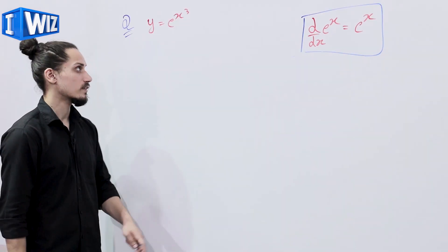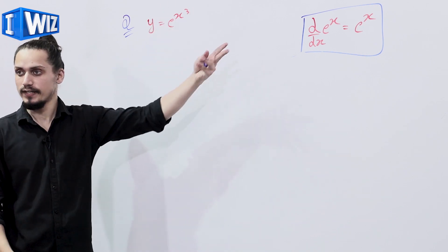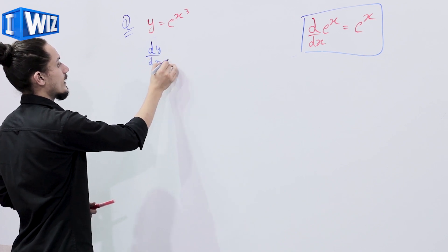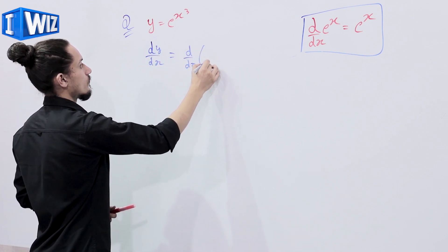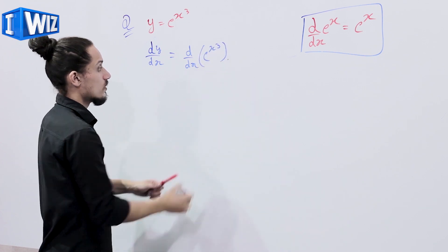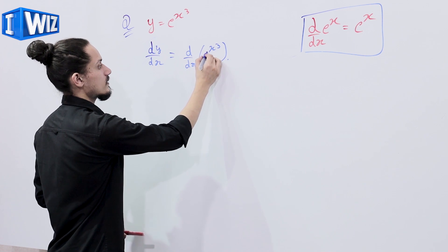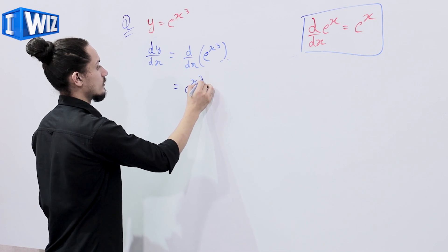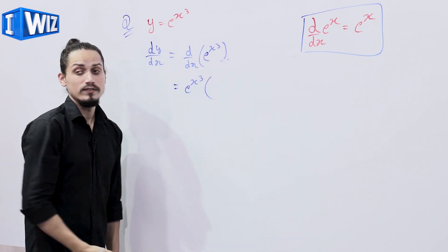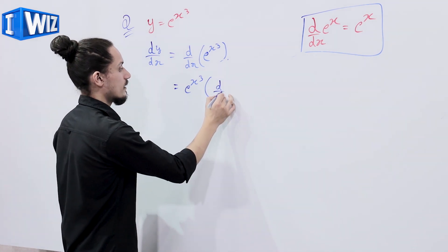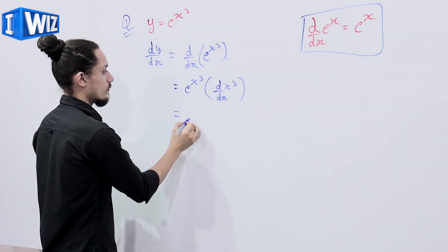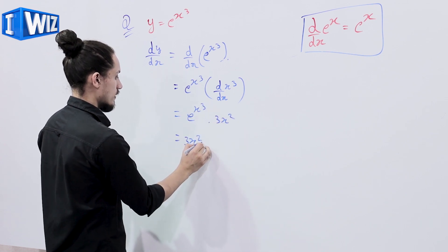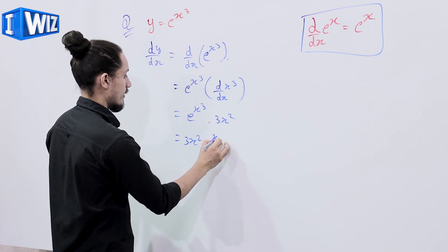In the next example we are given y = e raised to power x³. Its derivative dy/dx = d/dx of e^(x³). The derivative of an exponential function is the exponential function itself, so we get e^(x³). But since x³ is the exponent, by chain rule we also differentiate x³, giving d/dx of x³ = 3x². So the result is 3x² times e^(x³).